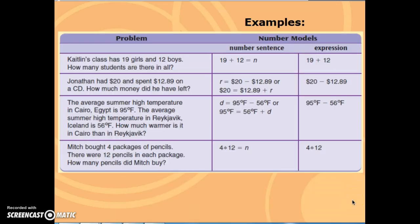Here are some examples of open number sentences. You can see in the first example, Caitlin's class has 19 girls and 12 boys. How many students are there in all? The open number sentence is 19 plus 12 equals n, where n would be the number of students in all.